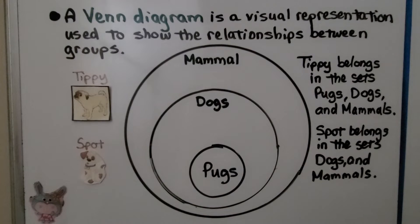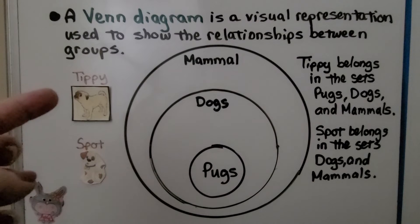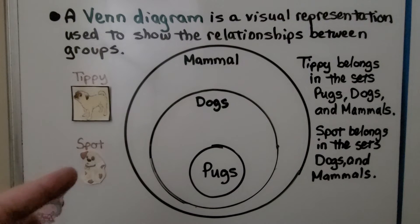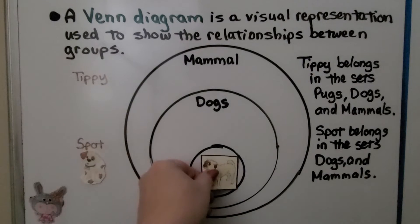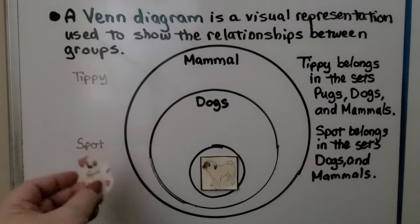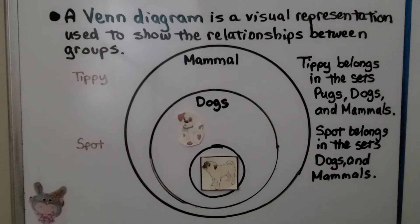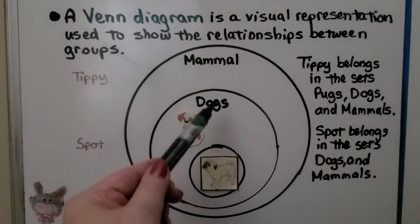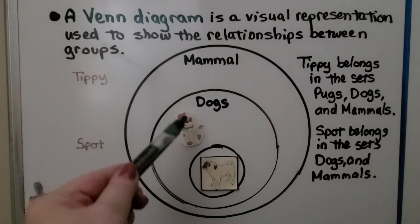A Venn diagram is a visual representation used to show the relationships between groups. Here we have a Venn diagram showing mammals, dogs, and pugs. Tippy is a pug and Spot is not a pug but he is a dog. Tippy belongs to the groups pugs, dogs, and mammals, while Spot just belongs to dogs and mammals.